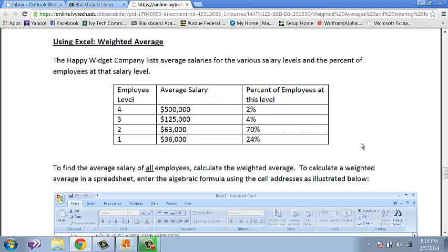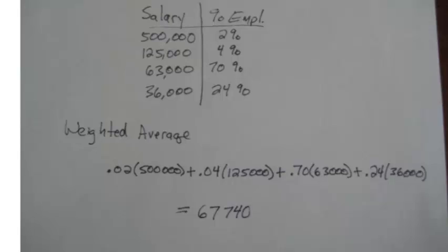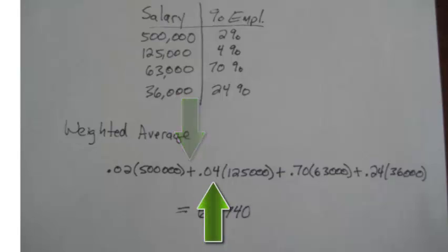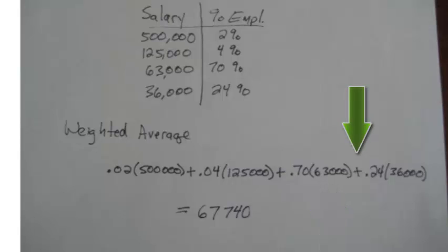Before I open up Excel, it would be good if you knew how to find a weighted average by hand. Here I've done it with pencil and paper. I'm going to multiply the salaries by the percent of employees who have each salary. It wouldn't be fair just to add those up and divide by four. Instead, I'm going to take 2% of $500,000, add that to 4% of $125,000, to 70% of $63,000, and add that to 24% of $36,000. I would follow order of operations — multiply the percent times the number first, get those four values, and then add them up, because we need to multiply before we add.